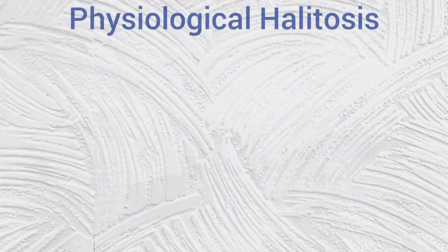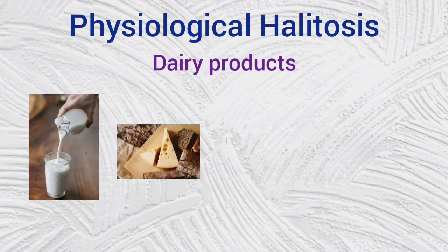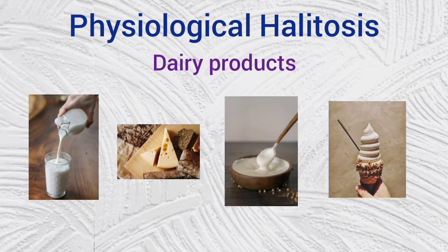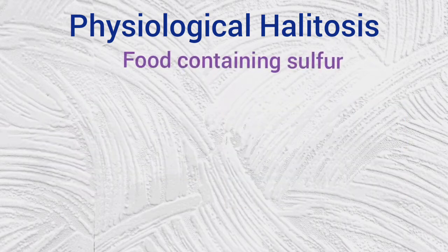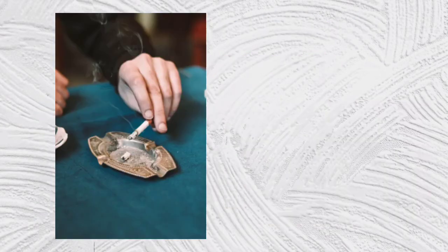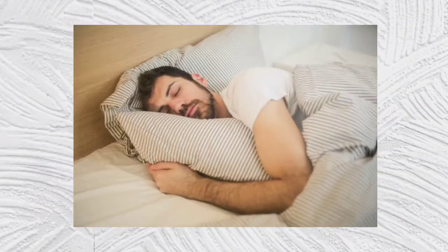Physiological halitosis is caused by foods containing lactose like milk, cheese, yogurt and ice cream, and also foods containing sulfur like onion and garlic. Other factors include smoking, alcoholic drinks, and lack of salivary flow during sleep.